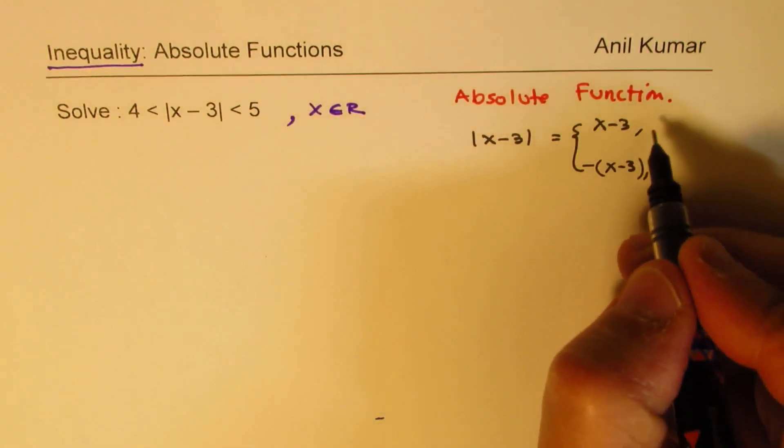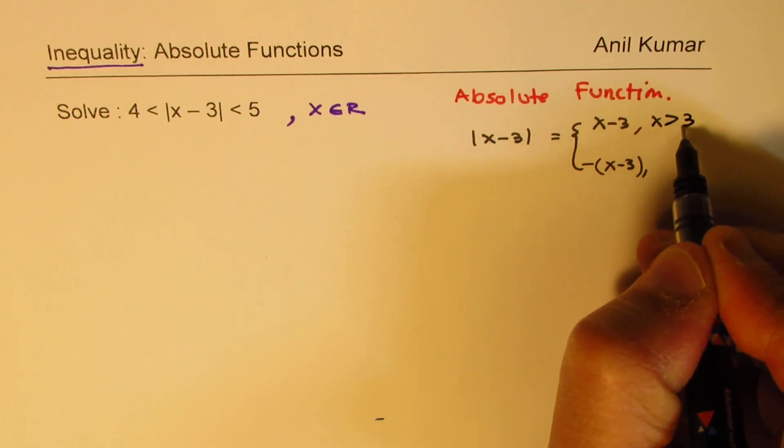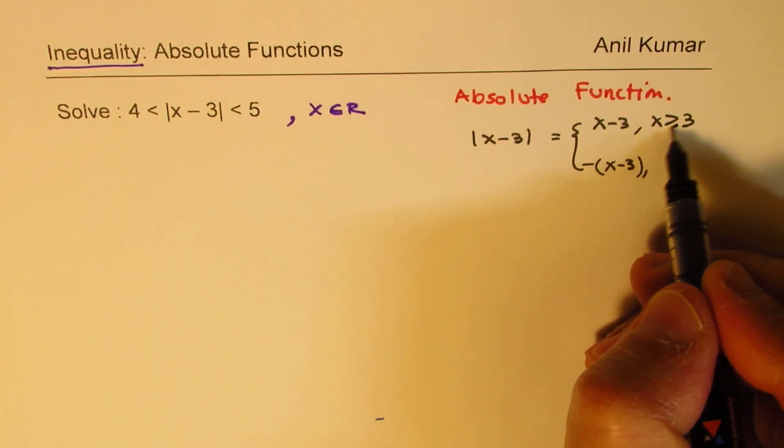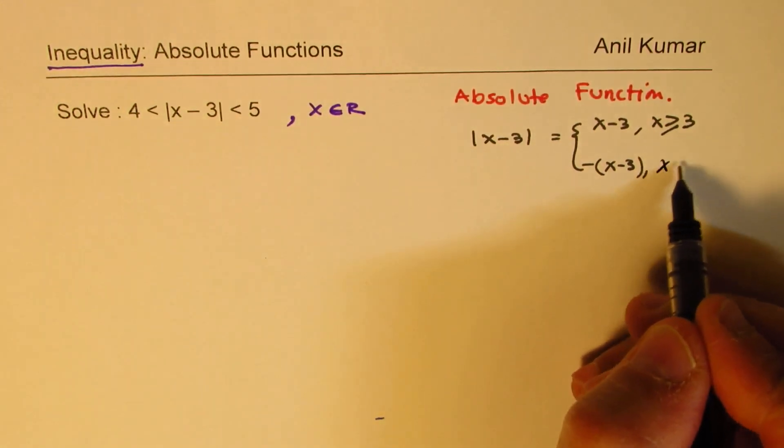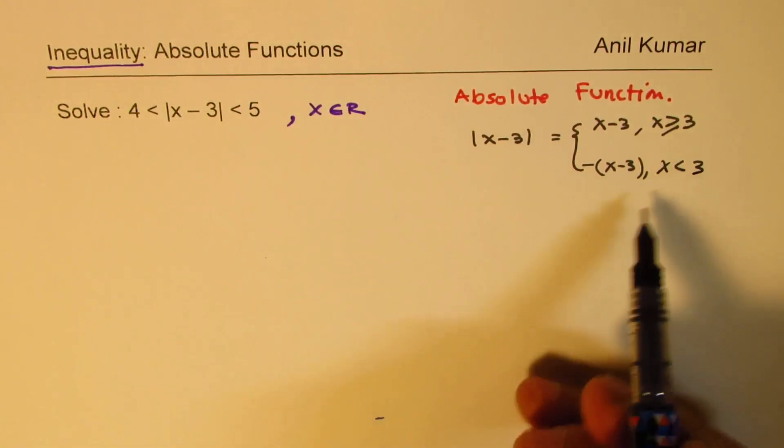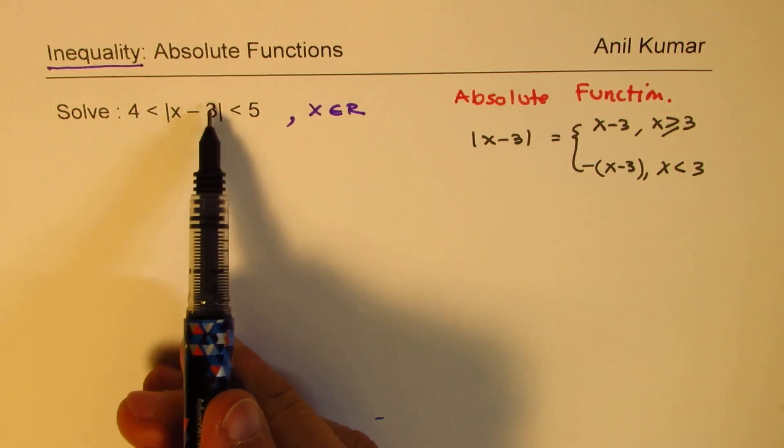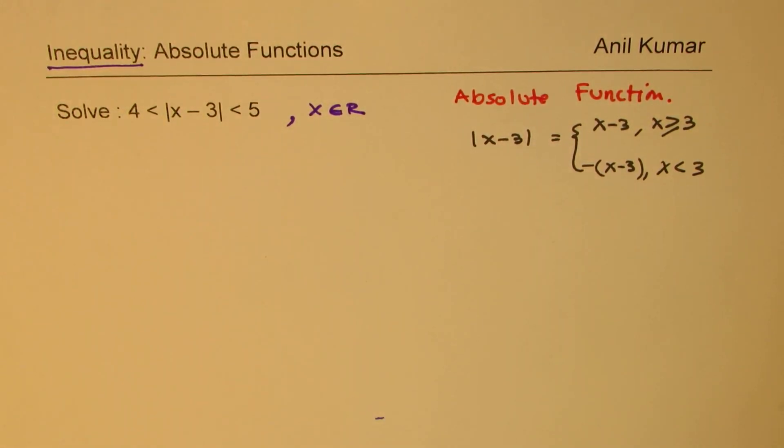If x is greater than or equal to 3, then it would be positive. But if it is less than 3, we can take the negative value and that also could be our answer. So that really means we have to solve this inequality in two cases.